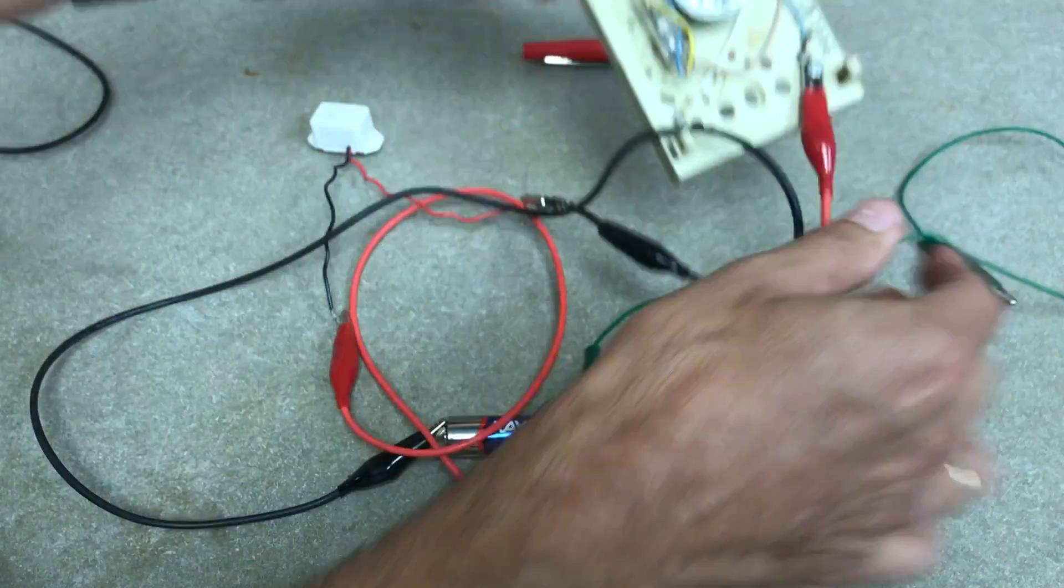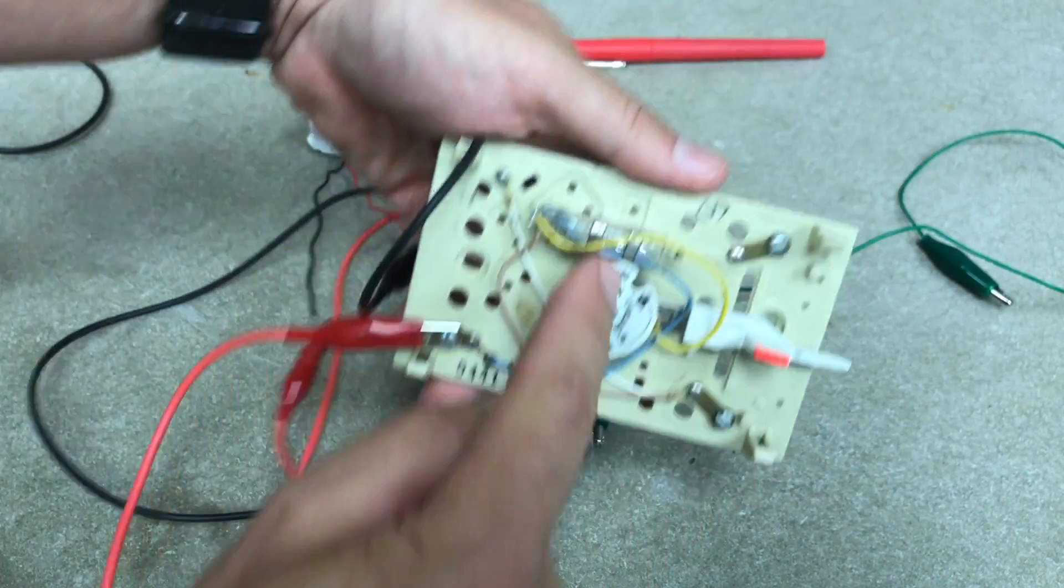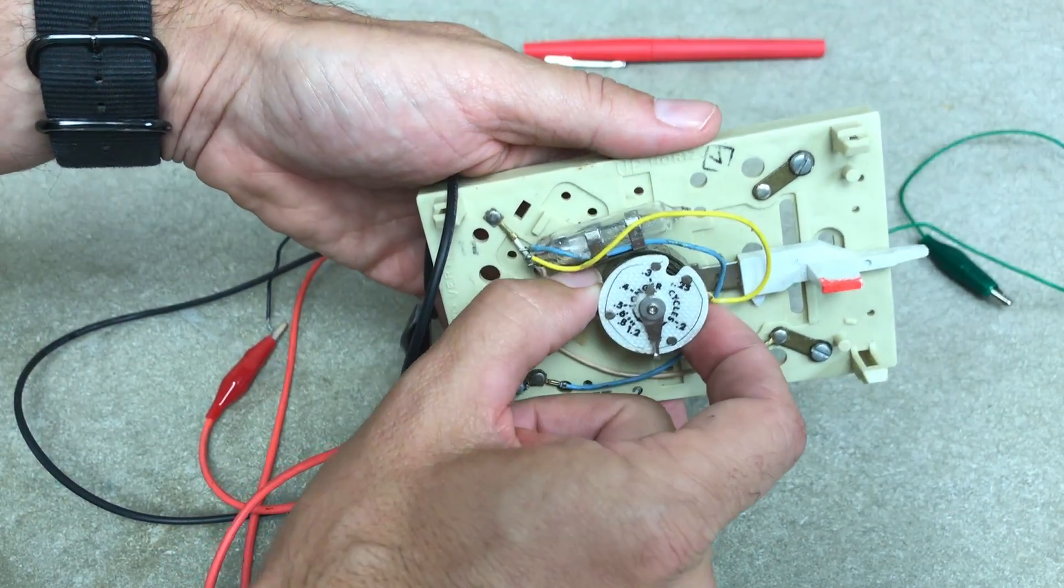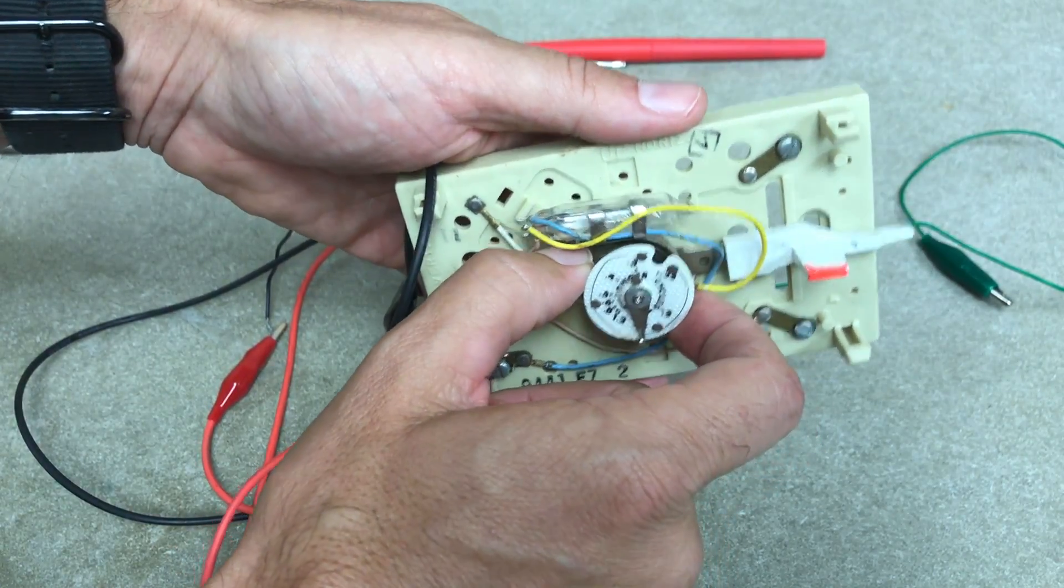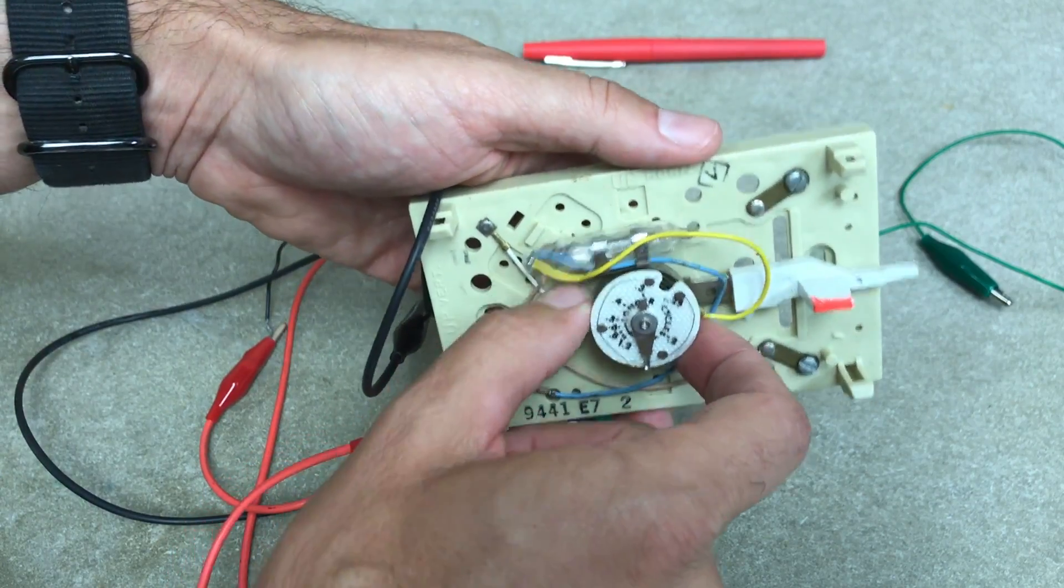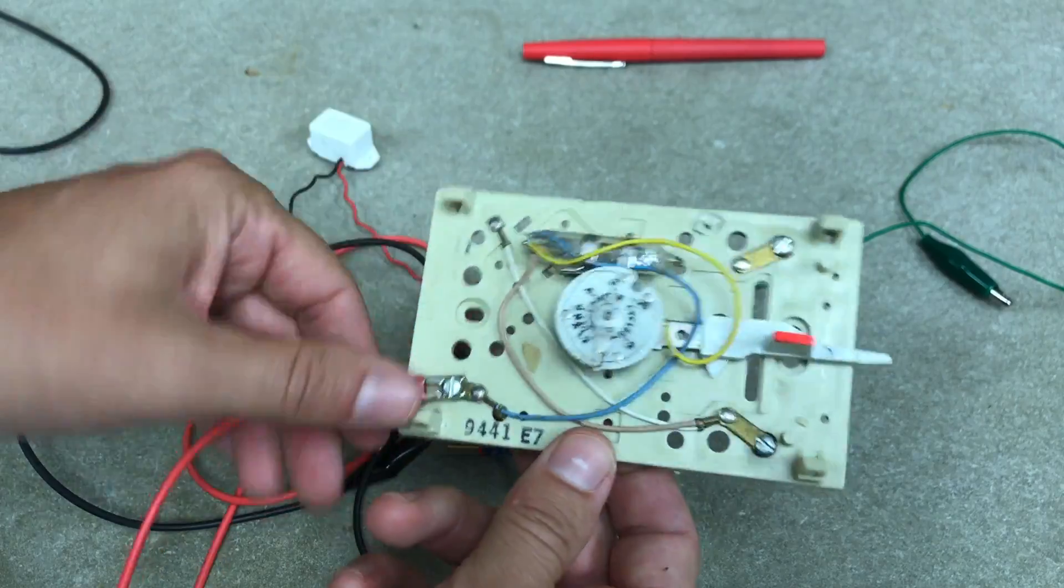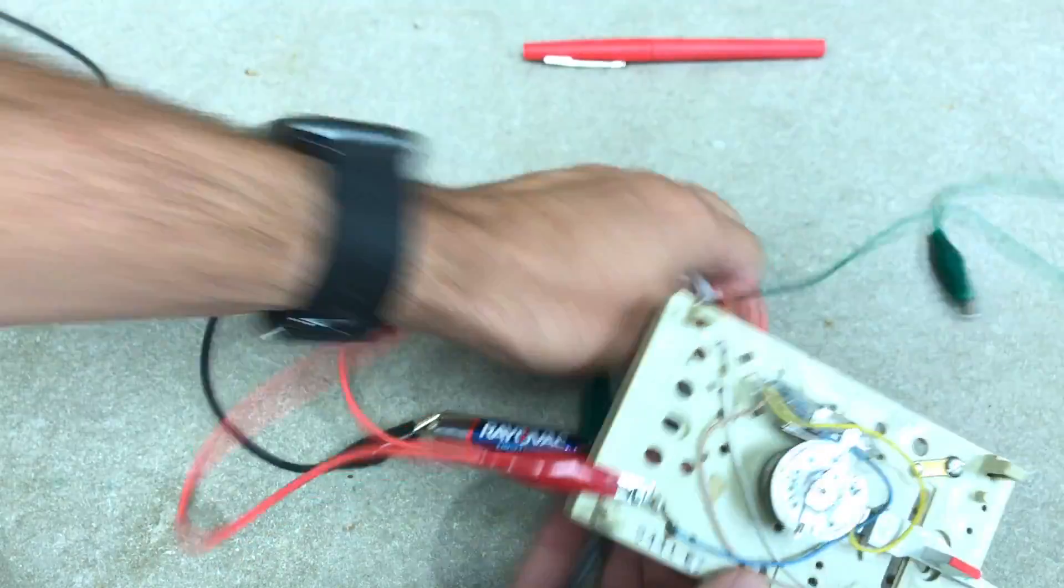That's how this works. In this thermostat this has a metal strip here that heats up and turns this so that it turns your heater on or off or your air conditioner on or off. But again you don't want to play with this because it's nasty. Okay so let's make one.